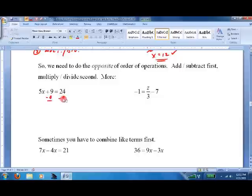Subtract 9. Subtract 9. Cancel. 5x equals 24 minus 9. 15. Divide both sides by 5. Cancel. 1, 3. X equals 3. 5 times 3 is 15. Plus 9 is 24. Checks.